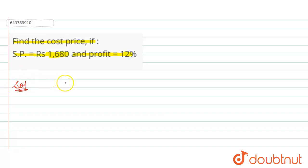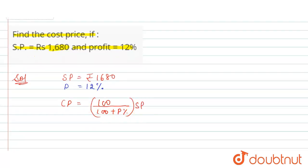So here in the question, given selling price is rupees 1680 and profit percent is 12 percent. So the formula to find cost price, that is CP, is 100 divided by 100 plus profit percent, into SP. Now put the values of selling price and profit.